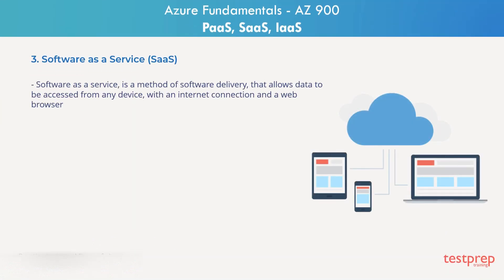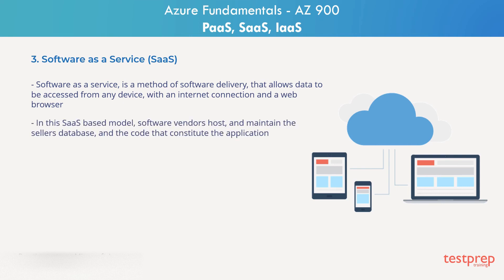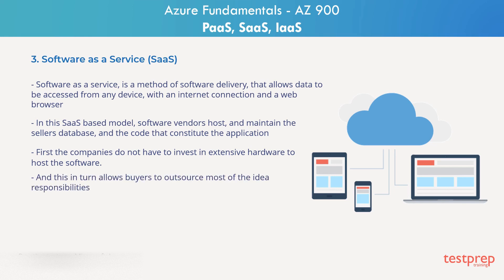Software as a service is a method of software delivery that allows data to be accessed from any device with an internet connection and a web browser. In this SaaS-based model, software vendors host and maintain the seller's database and the code that constitute the application. Companies do not have to invest in extensive hardware to host the software, and this in turn allows buyers to outsource most of the IT responsibilities.